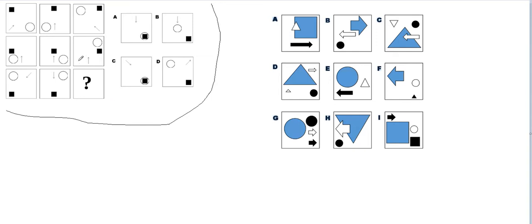Let's use these three techniques to solve this question. First of all, there are no colors, so we don't have to worry much about color — it's just black and white. The small squares are black and others are white. Now, the outer shape is a box, and all of them are the same, so we don't need to worry about the outer shape.